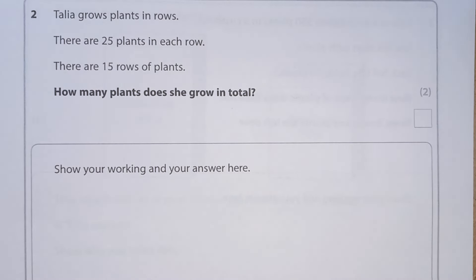Question two. Talia grows plants in rows. There are 25 plants in each row and 15 rows of plants. How many plants does she grow in total?